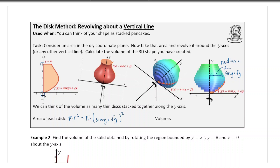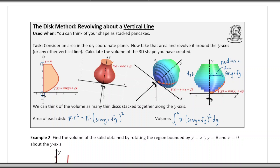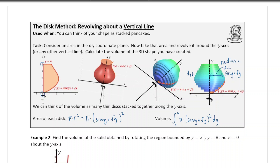The area of each disk is π times radius squared, which for this particular example is π times (sin(y) + √y)². We're not going to solve this one — just set it up. The volume is the integral from y = 0 to y = 4 of π times radius squared dy. The width of each disk is dy, since they're imagined to be infinitely thin. The volume is the sum of all those infinitely thin disks.